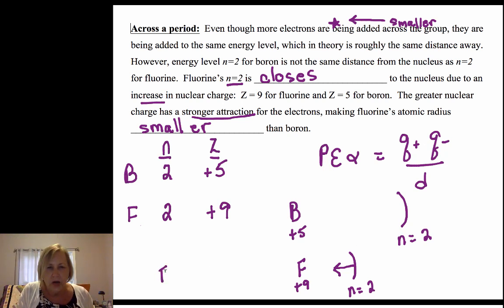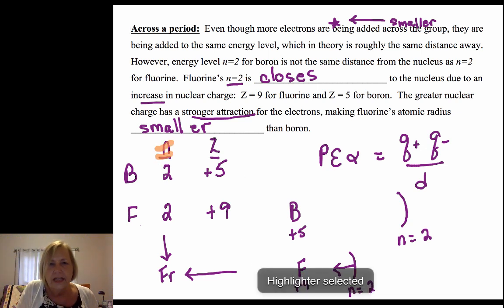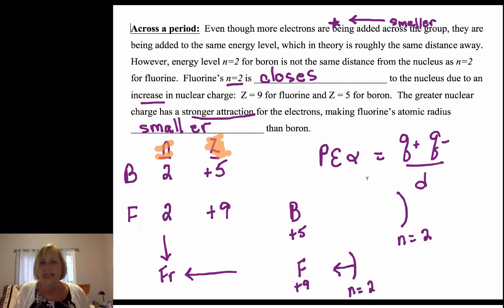To summarize: to tell us what the trend is, shoot for francium. To explain the trend, you need to get down to the atomic level and talk about energy levels and nuclear charge. It really helps to invoke Coulomb's law.